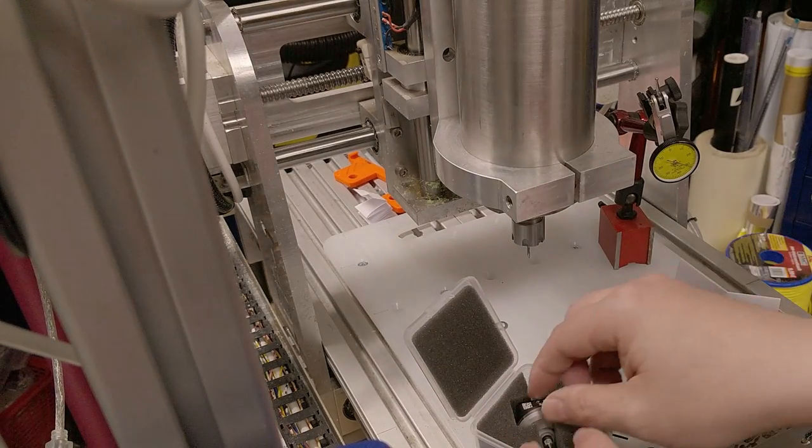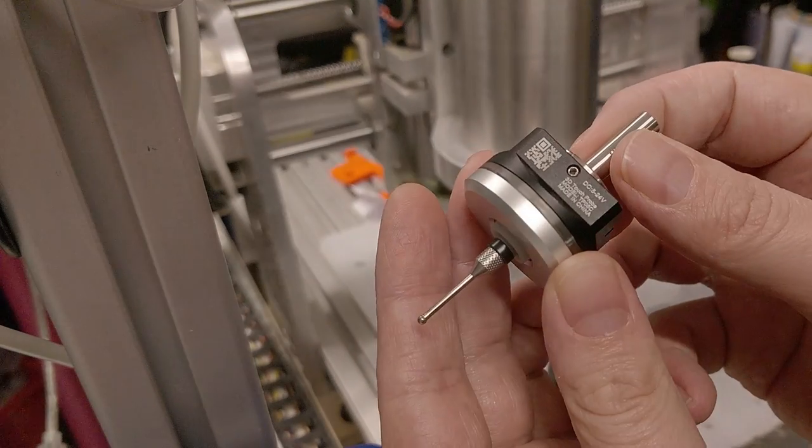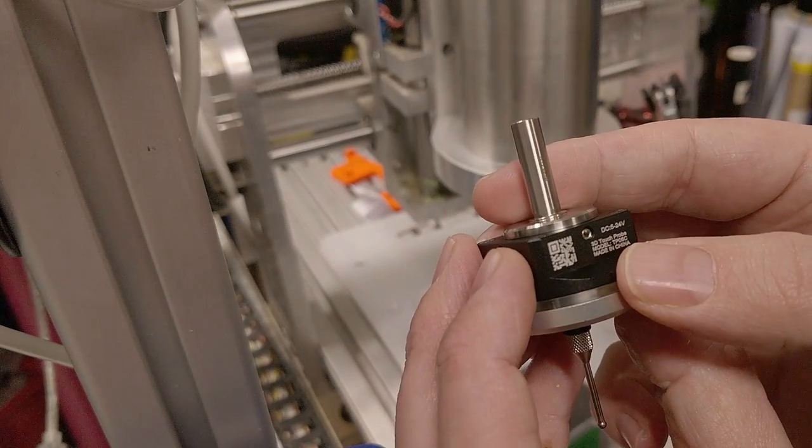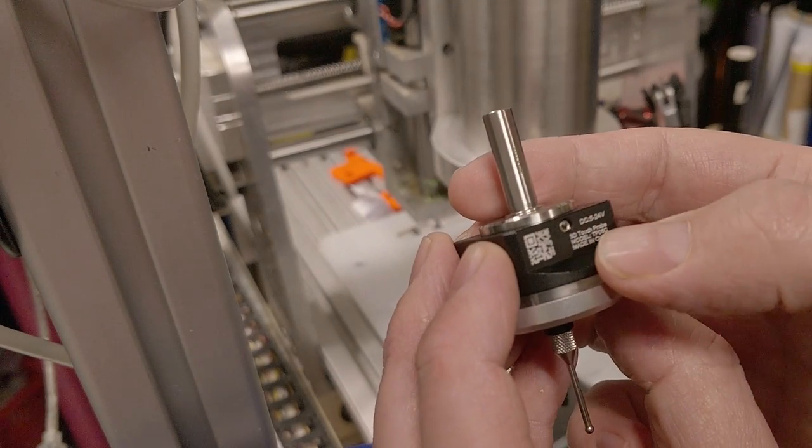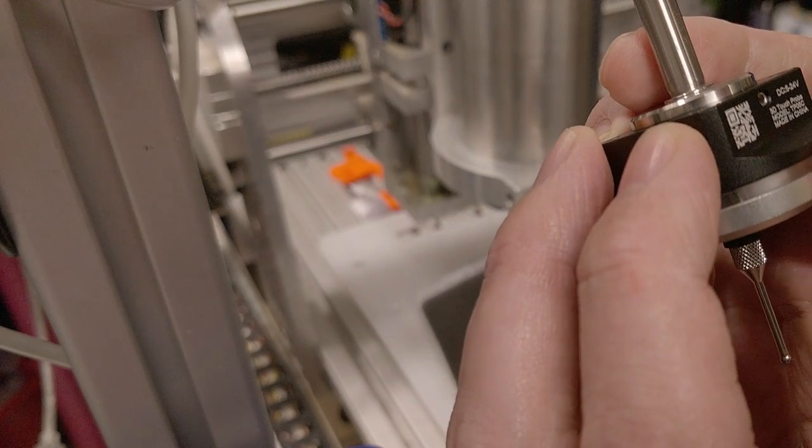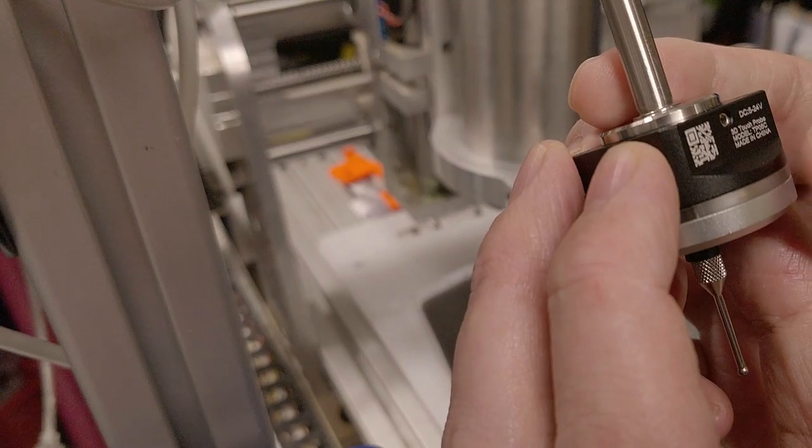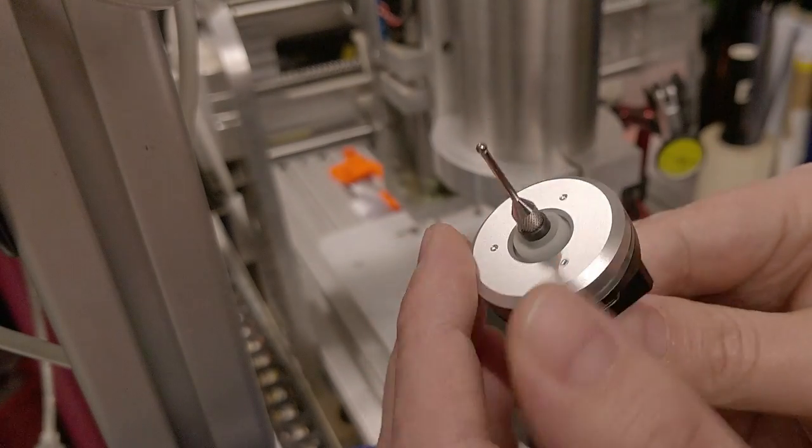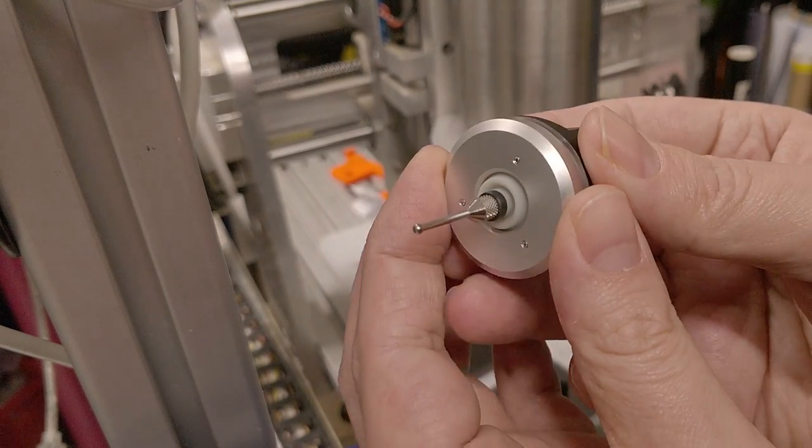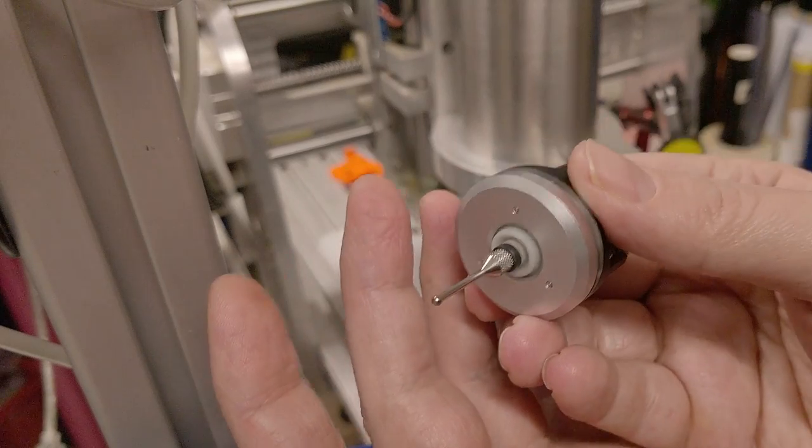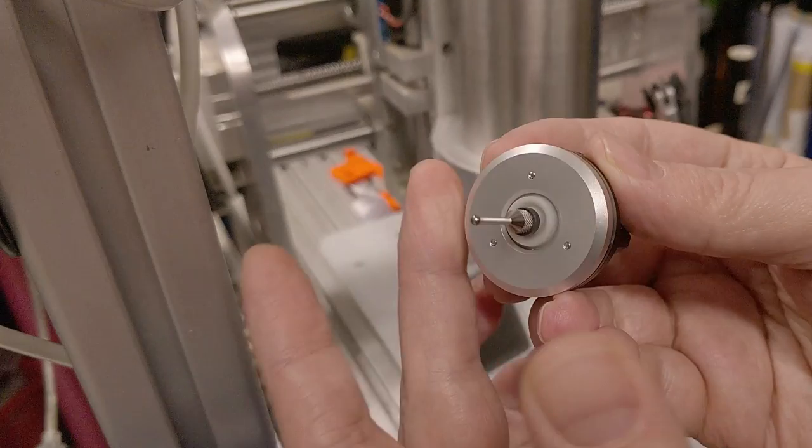There's the touch probe itself. We have DC 5 to 24 volt, 3D touch probe model TP05C, made in China. It really feels like a good piece of equipment. I mean it's not big and not heavy, but it feels good, it feels solid. The case, for example, is all aluminum.